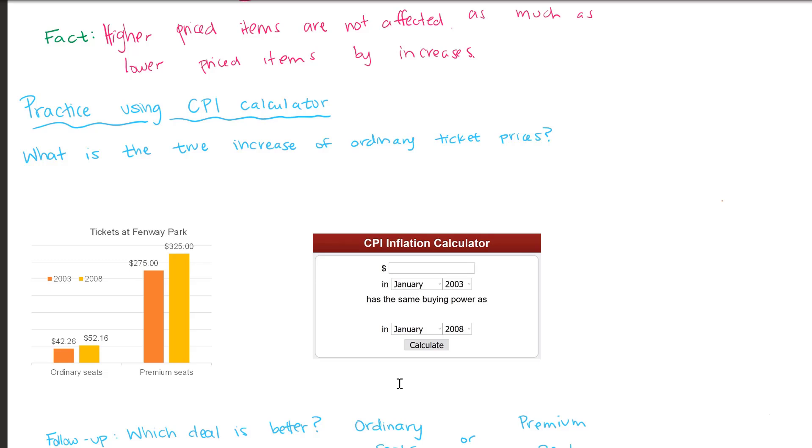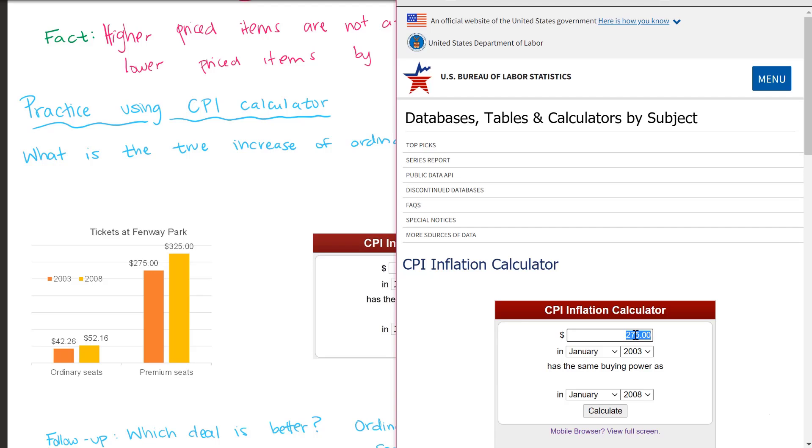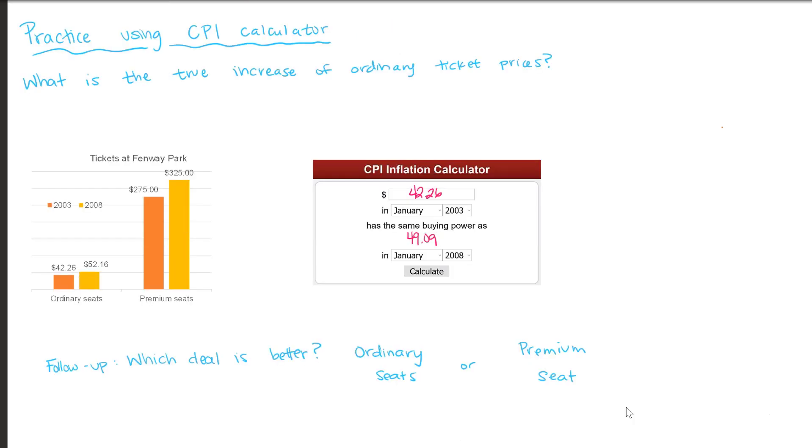Again, now we're asking the question of what is the true increase of the ordinary ticket prices. So we can go back to our CPI calculator. Now we're interested in the price of the ordinary seats from 2003. So that's the $42.26. And again, we make sure that the year is set to 2008. The ordinary seats should have been worth $49.09 in 2008.